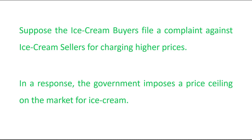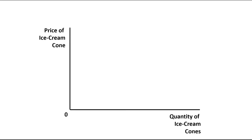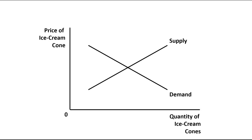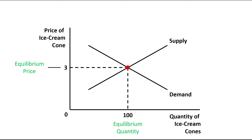Now two outcomes are possible. Let's see the first outcome. Here we have two axes: on the vertical axis we have the price of ice cream cones, and on the horizontal axis we have the quantity of ice cream cones. This is the demand curve and this is the supply curve. The intersection point of demand and supply curve is the equilibrium point. Three dollars is assumed as the equilibrium price, and 100 ice cream cones is assumed as the equilibrium quantity.